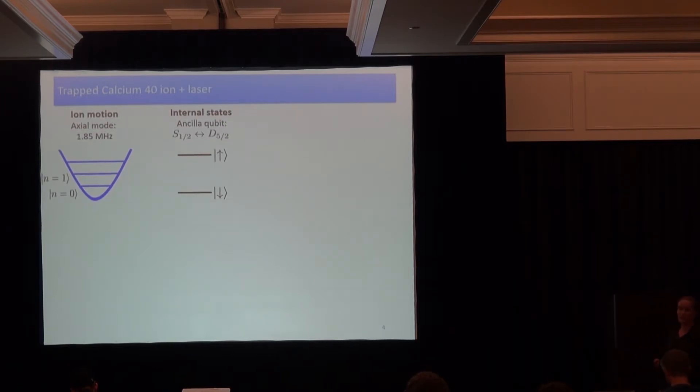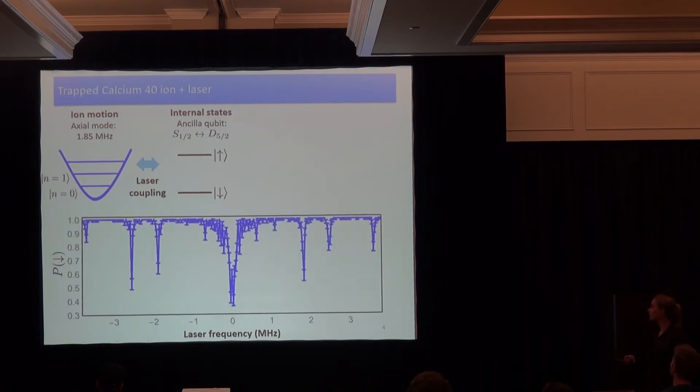So the experimental system, a single trapped calcium-40 ion. We have two kinds of degrees of freedom. On one side the perfect harmonic motion in the trapping potential. On the other side the internal states typically used as qubit. We now shift our perspective really on this motion and use the qubit as a way to manipulate the motion. Here now a more practical picture of how we can couple the two degrees with lasers.